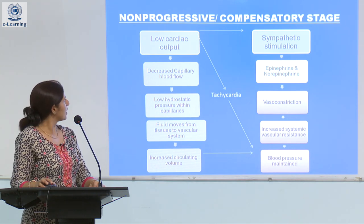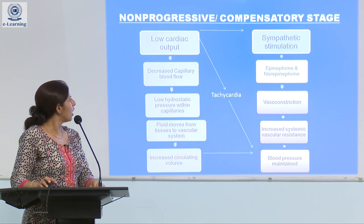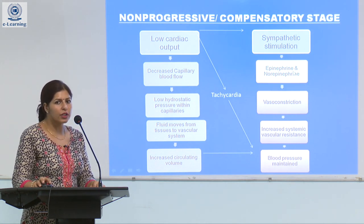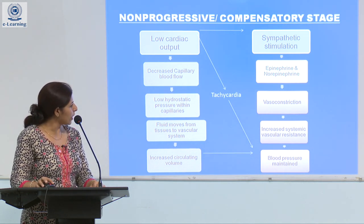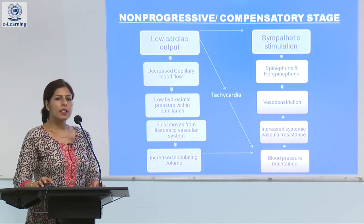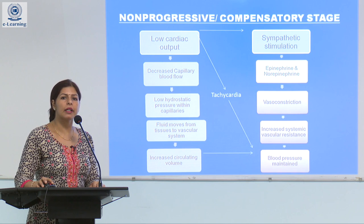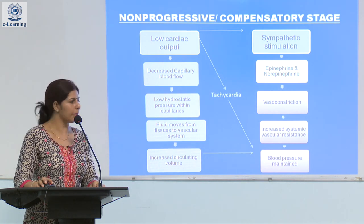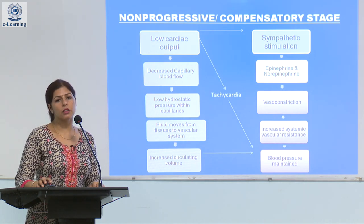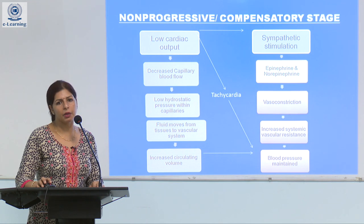In the non-progressive or compensatory stage, the low cardiac output stimulates the sympathetic nervous system, which releases epinephrine and norepinephrine. Under the influence of these vasoconstrictors, vasoconstriction occurs, increasing systemic vascular resistance and maintaining blood pressure. On the other hand, decreased capillary blood flow lowers hydrostatic pressure within the capillaries, sensing which fluid from the interstitial space starts moving into the intravascular compartment. This again maintains blood pressure and circulatory blood volume. So the body, without any external intervention, has compensated for the loss and for a short duration maintains blood pressure and adequate blood volume.